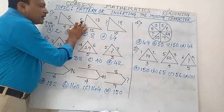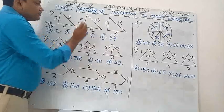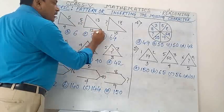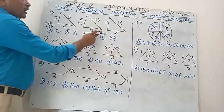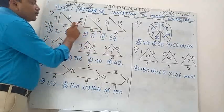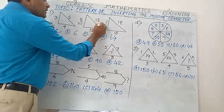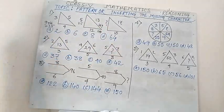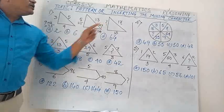Now come to the next one. 5×5 = 25, and 12×12 = 144. So 144 plus 25 is 169, which is 13×13. So similarly you will have to find out the missing value.